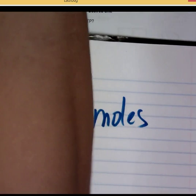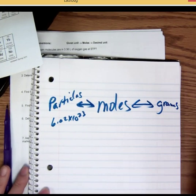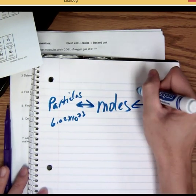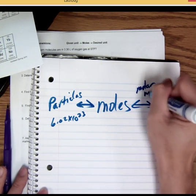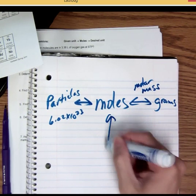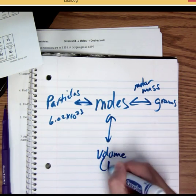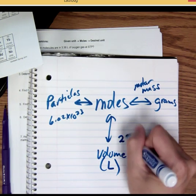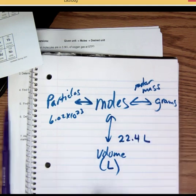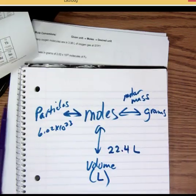It can go to grams. Which is the mass. And you use the molar mass. Okay? And it can go back and forth between volume. The liters. And you use 22.4 liters. 22.4 liters. Okay?